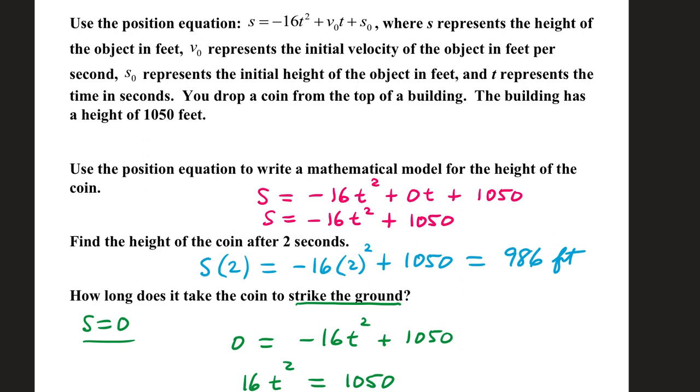Use the position equation at the top. S represents the height of the object in feet. V sub 0 represents initial velocity in feet per second. S sub 0 represents the initial height in feet. T represents time in seconds. You drop a coin from the top of a building. The building has a height of 1,050 feet. Use the position equation to write a mathematical model for the height of the coin.